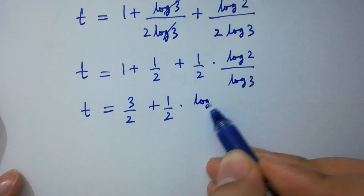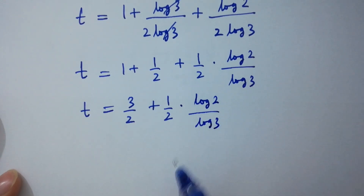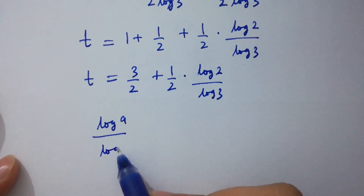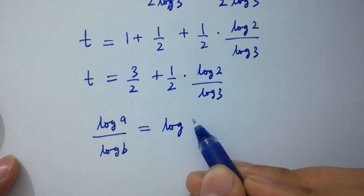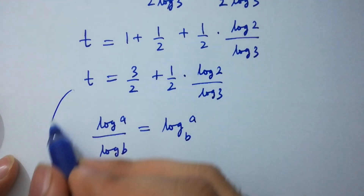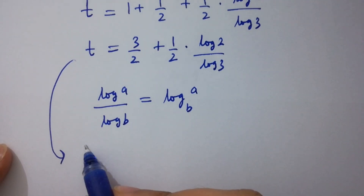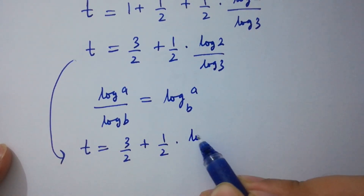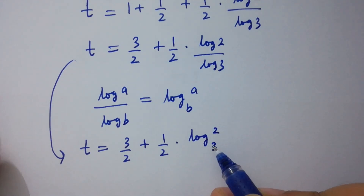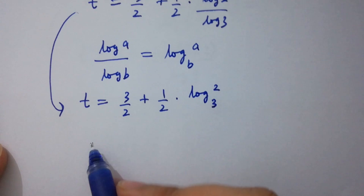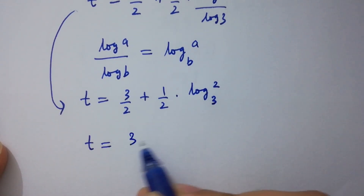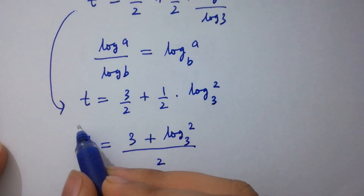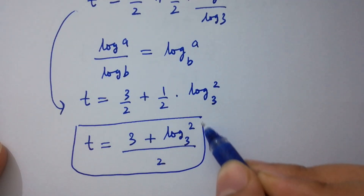We have log 2 over log 3. Using the change of base formula, log a over log b equals log a to the base b, t equals 3 over 2 plus half log 2 to the base 3, which is the same as t equals 3 plus log 2 to the base 3, all over 2. This is the value of t.